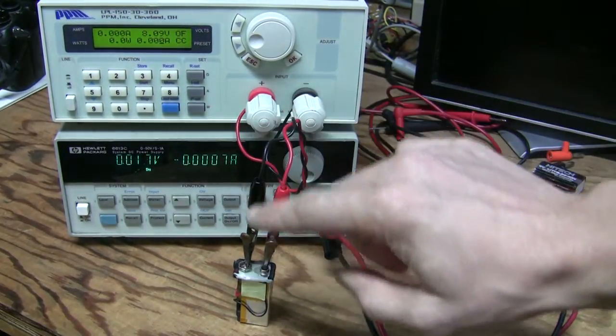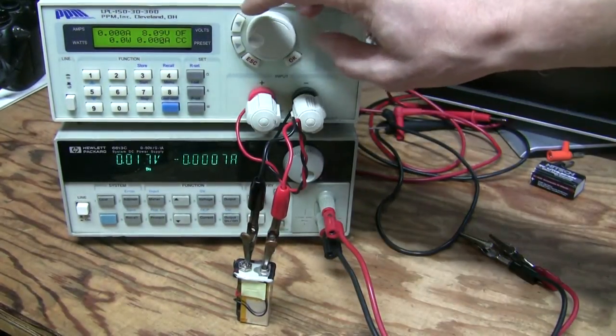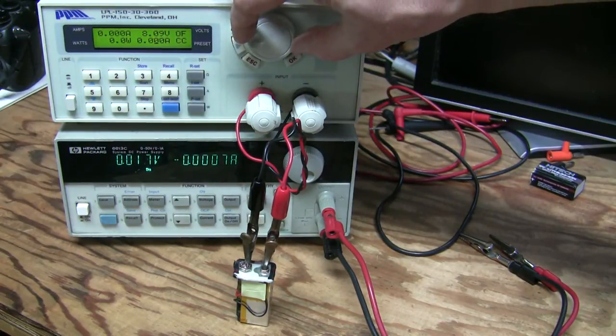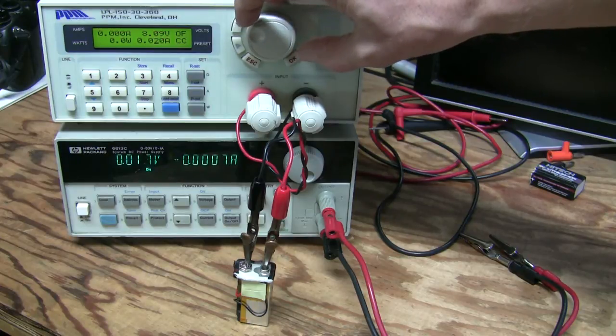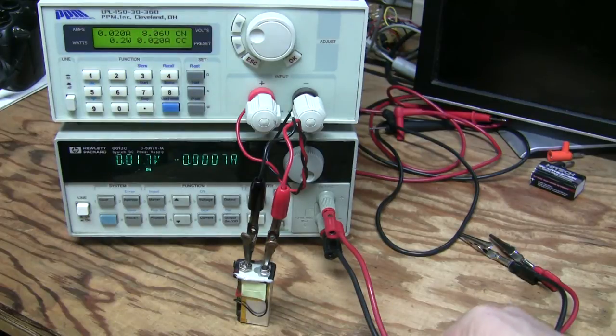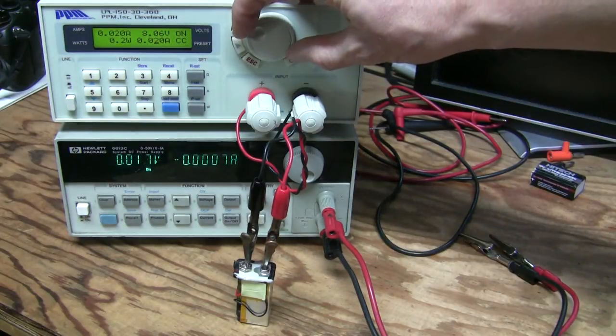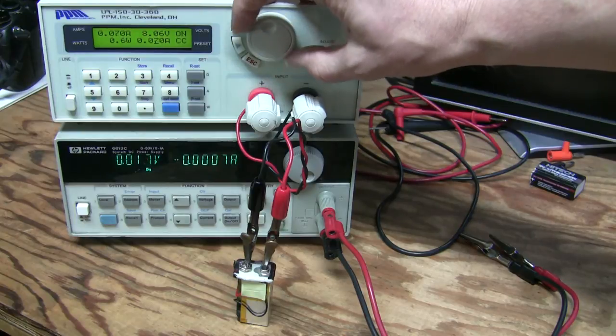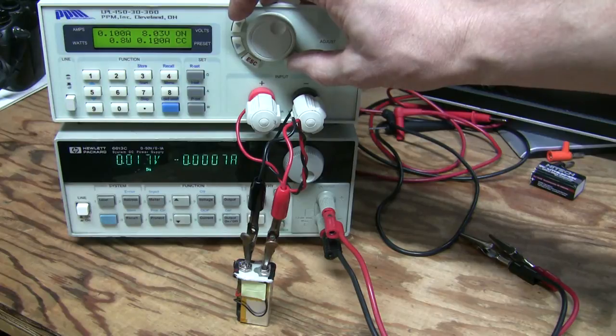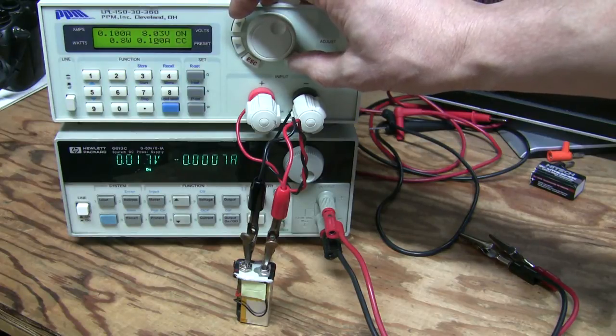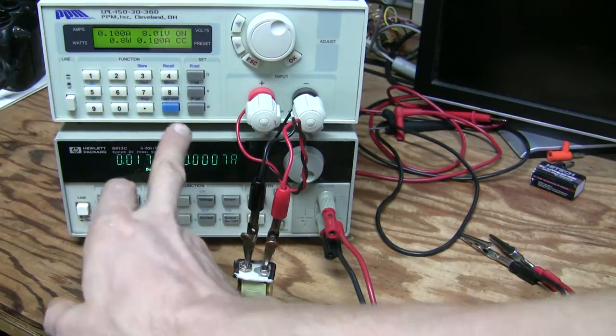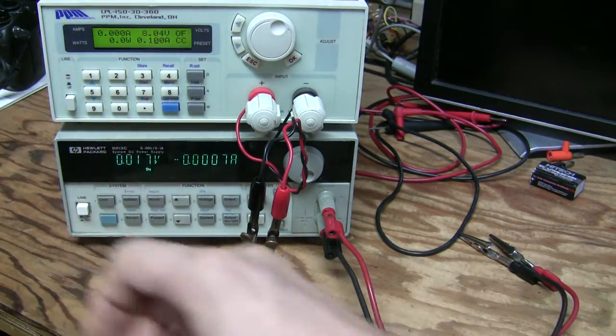Let's test it with the electronic load. I connected the battery to the electronic load. Let's give it some load. Let's say 20 milliamps. Let's enable it. No problem at all. It's taking it. Let's increase that to 100 milliamps. No problem at all. Looks like a success to me. Let's disable it for now.